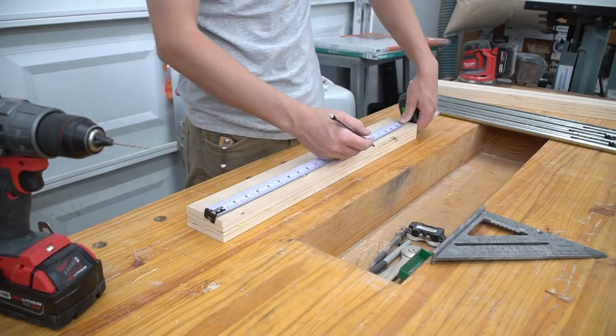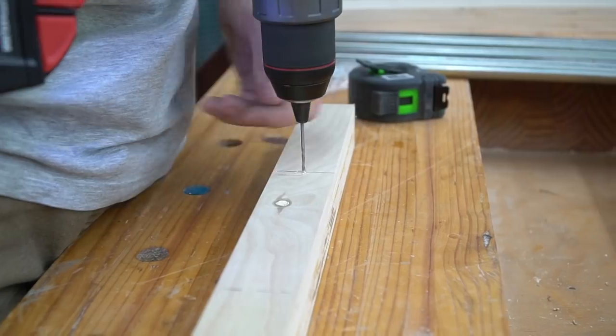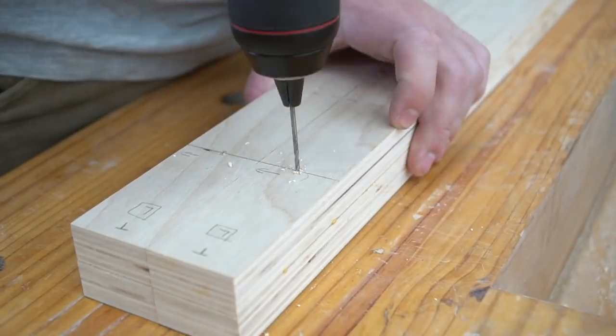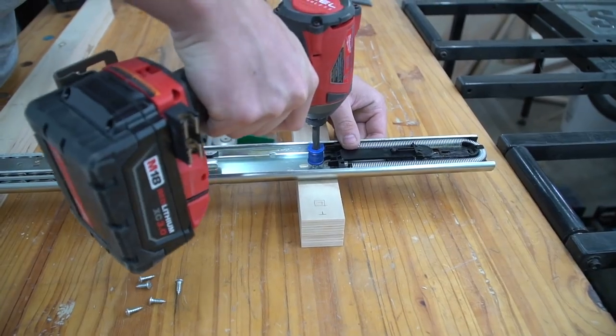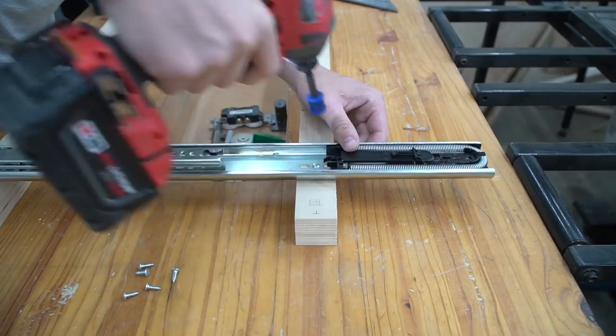Next we mark the center of each drawer onto the blocks. Mark the center of each strip on each of the drawer marks that we made earlier and pre-drill a hole in the center for mounting the slides. This will ensure the slides are mounted square and in line with each other.